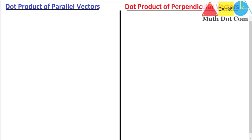Hello everyone. Today's topic is how you can find the dot product of parallel vectors and perpendicular vectors. Whenever we come across parallel vectors, the angle theta between the two vectors will be zero. First of all, we will discuss the dot product of the parallel vectors.